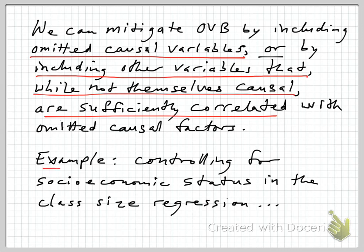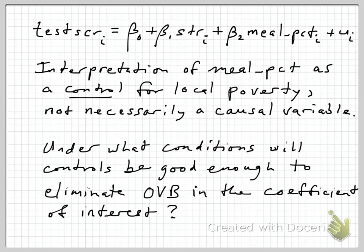Let's return to an example we've looked at repeatedly: the class size effect on test scores in school districts. One thing we've seen is that we suspect there may be omitted variable bias occurring because we may not be adequately controlling for the socioeconomic status of the school districts, and that could be correlated with both class size and test score performance.